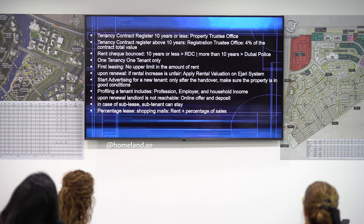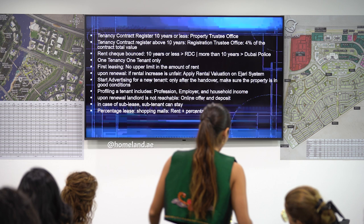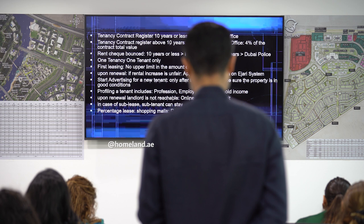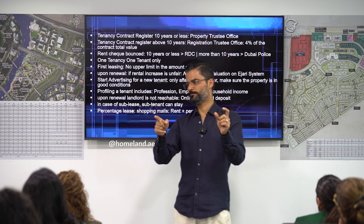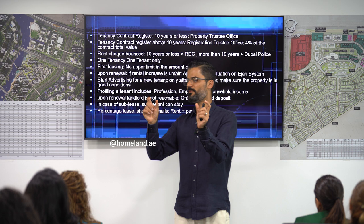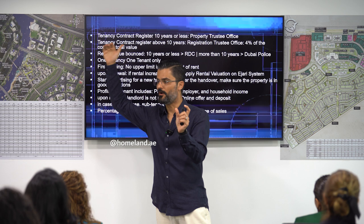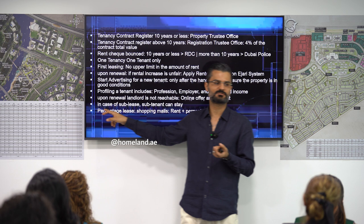Percentage lease contracts: common in shopping malls. One form: the rent is 500 AED per square foot or 11% of gross sales per year, whichever is higher. Another form: 500 AED per square foot plus a percentage of gross sales exceeding a threshold. Both forms are called percentage leasing. Percentage leasing is most commonly used for shopping malls.